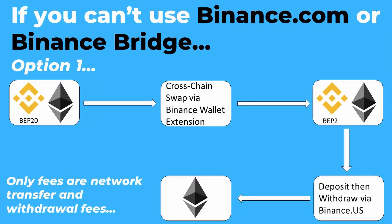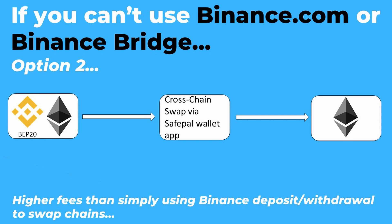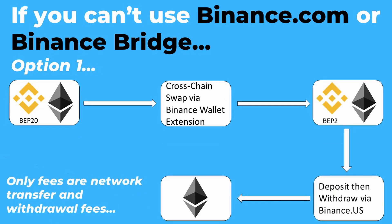Things like Binance-backed tokens — Binance pegged Bitcoin, Binance pegged Ethereum, BUSD, and pretty much everything on the Binance Smart Chain — are only really supported on binance.com. So if you're in a situation where you can't use binance.com, including people in the US who have to use Binance US, you're going to need to use some other tools as an intermediary to get your funds in and out of the Binance Smart Chain.